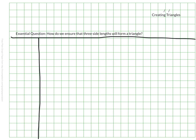The essential question for the video is how do we ensure that three side lengths will form a triangle? And as we know, triangles have three sides, but have you ever stopped to think about how those three sides come together to make a triangle?